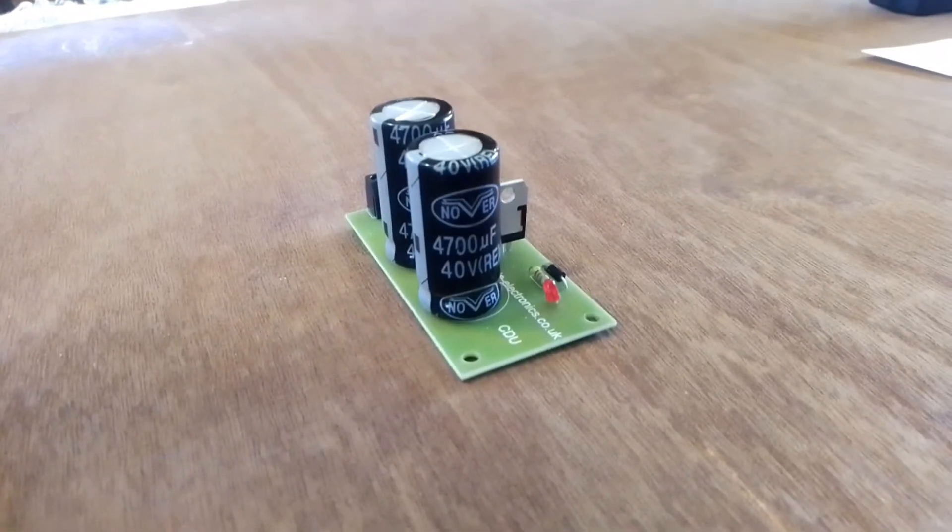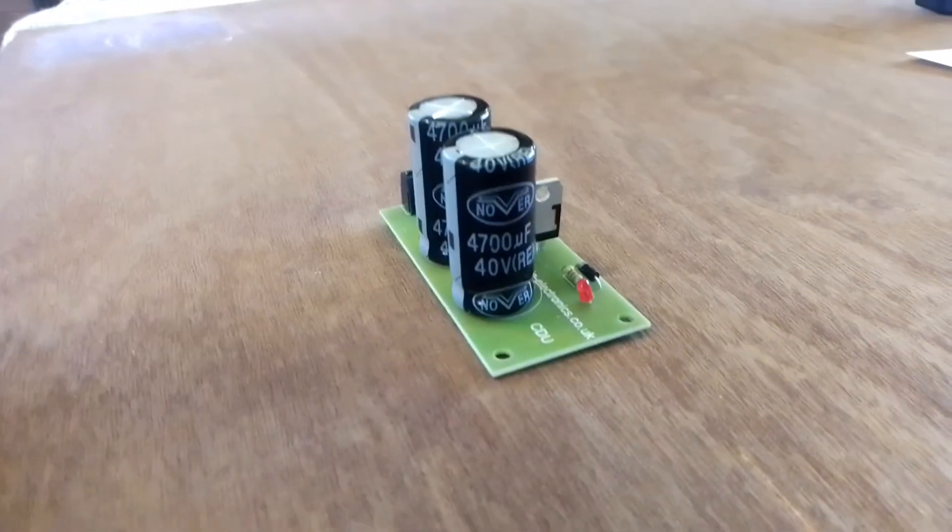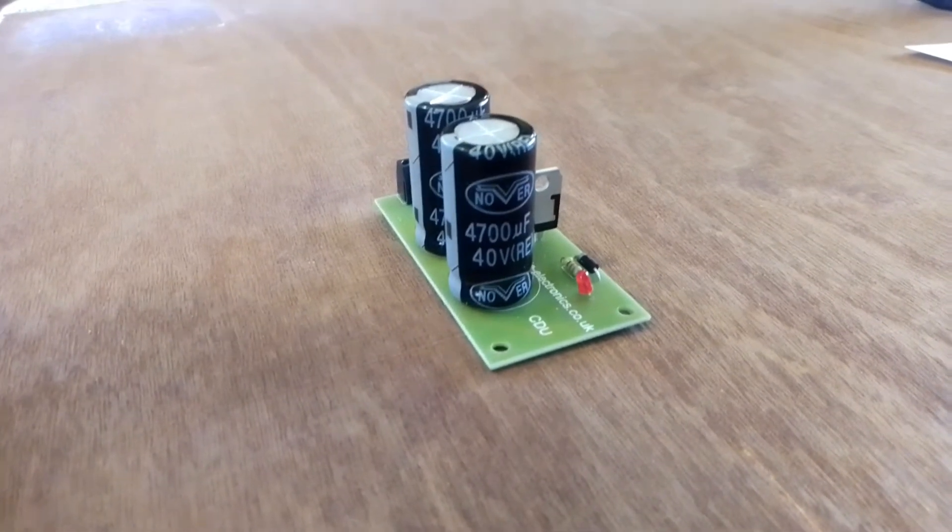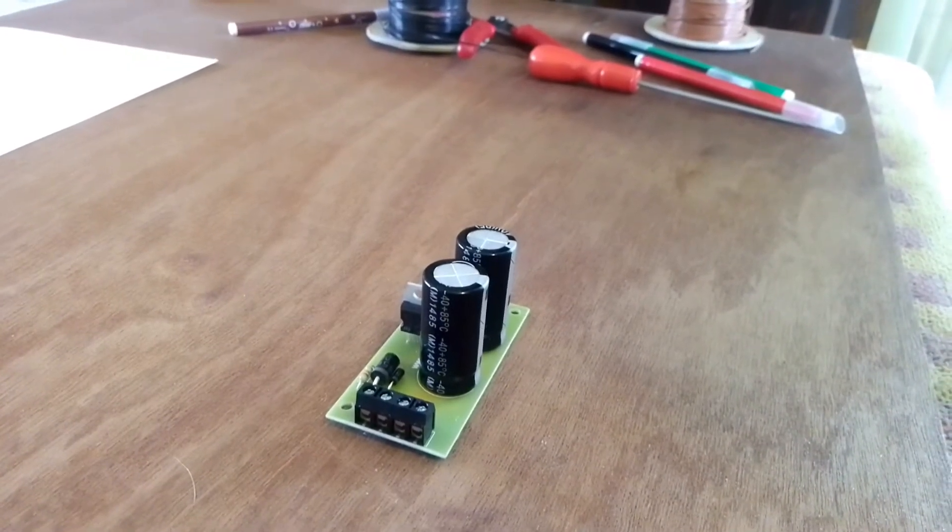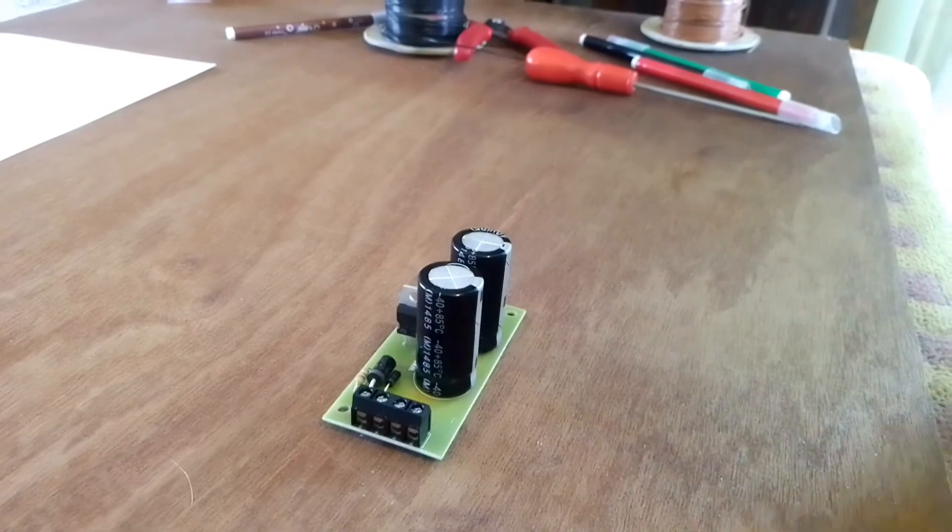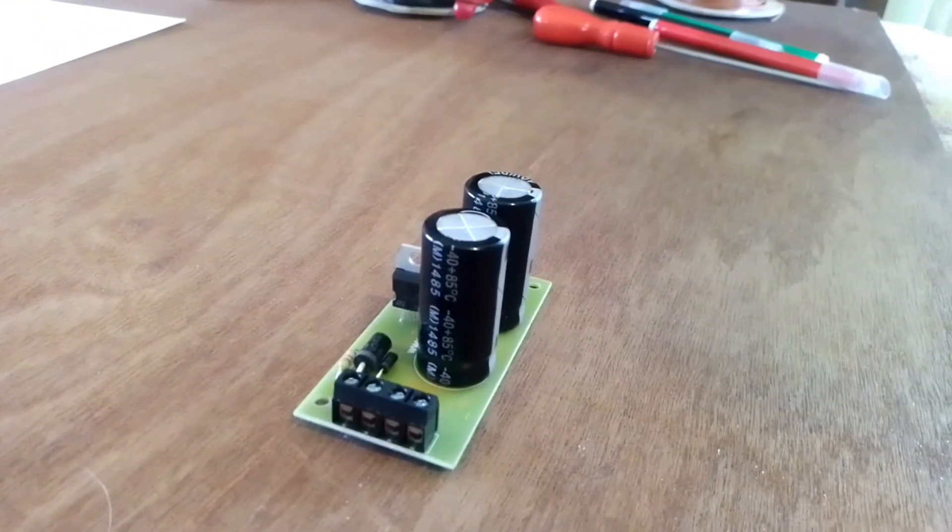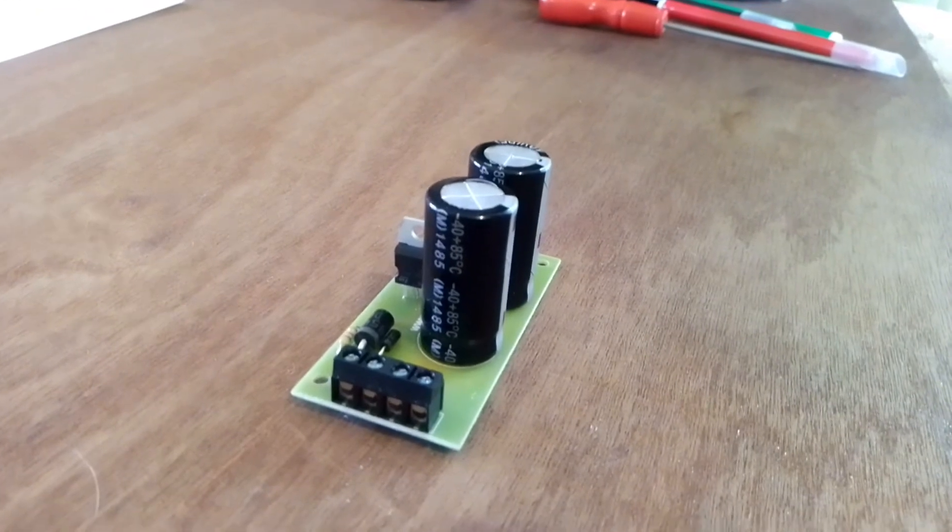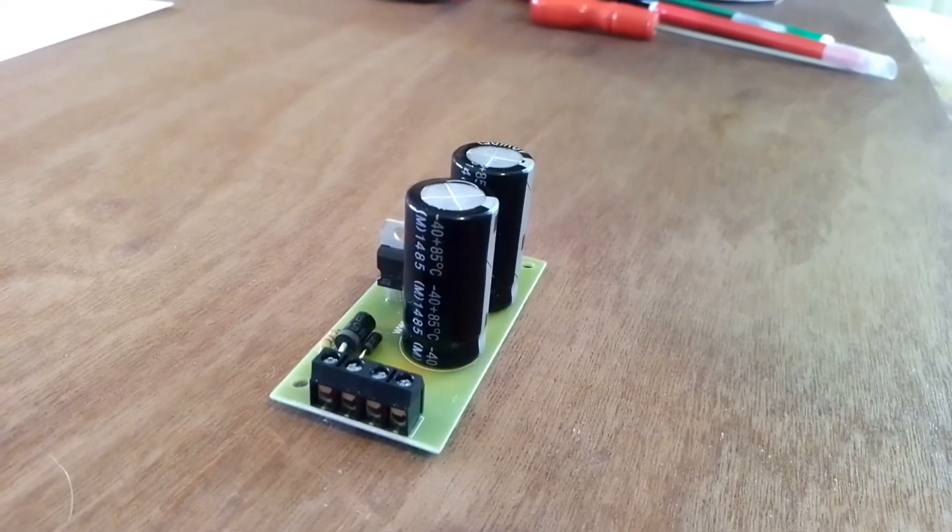CDU stands for capacitor discharge unit. These are the capacitors. They store the electrical charge. There are two capacitors on our extra power capacitor discharge unit. They have a value of 4700 microfarads. The higher that number is, the more electrical charge will be stored in them.